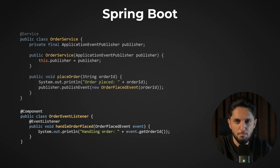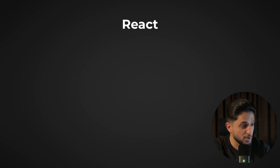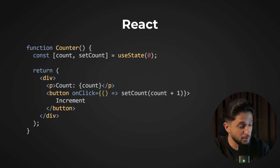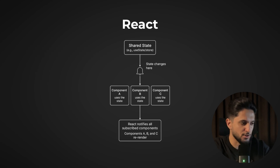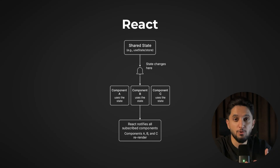Under the hood, Spring's event system manages the observer registration and notification processing. In React, the observer pattern shows up in state management. When you call setState or update a state variable with hooks, React automatically re-renders all components that depend on that state. The components are essentially observers of that state — React handles the notification process, and its reconciliation system knows what needs to be re-rendered.